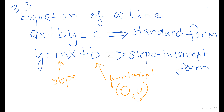So the second thing we're learning in section 3.3 is the equation of a line — specifically the slope-intercept form. Both the standard form Ax + By = C and the slope-intercept form y = mx + b are equations of a line. Write them down and make sure you understand both.